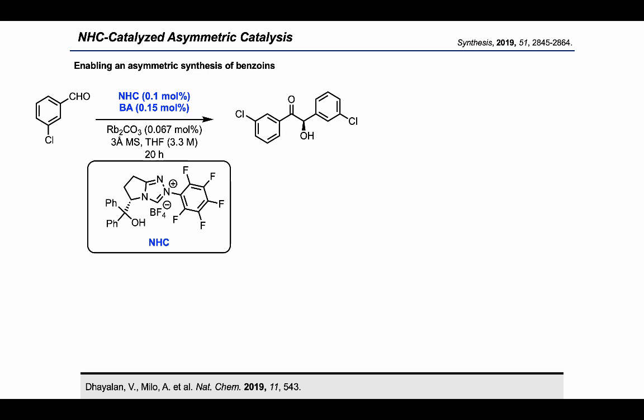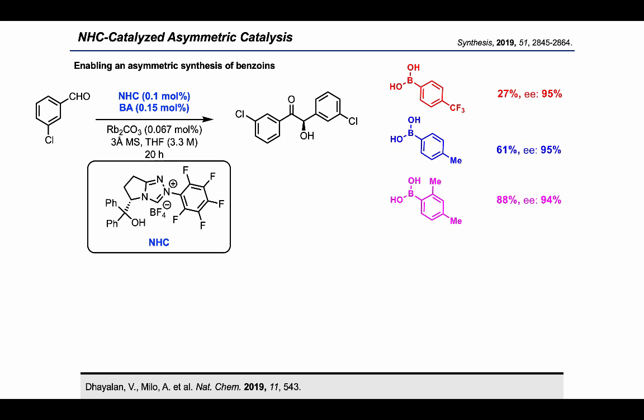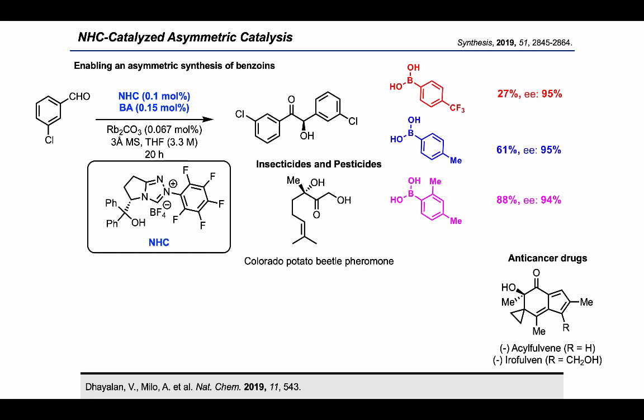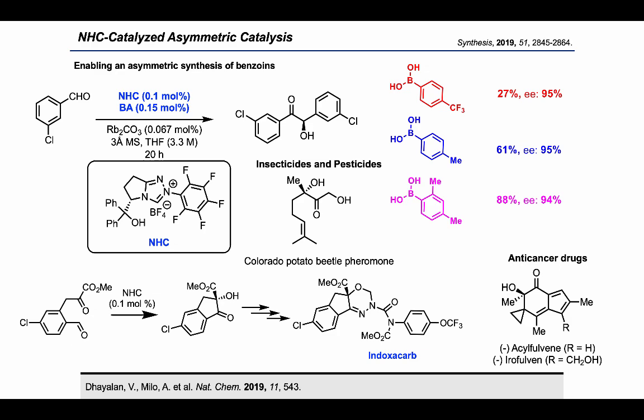Recently, we reported a protocol for highly enantioselective benzoin products on a large scale — a 7g, 50 mmol reaction — in the presence of NHC carbene at 0.1 mol% loading and a boronic acid. Using this reaction condition, CF3 boronic acid gave low yield but high selectivity. 4-Methylphenyl boronic acid gave the same selectivity with improved yield, and 3,5-dimethylphenyl boronic acid gave good selectivity and yield. This low catalyst-loading organocatalytic approach is quite interesting and applicable for synthesis of cancer drugs and insecticides. We can also synthesize alpha-trioxametaketone ester analogs via intramolecular benzoin reaction to synthesize indoxacarb.